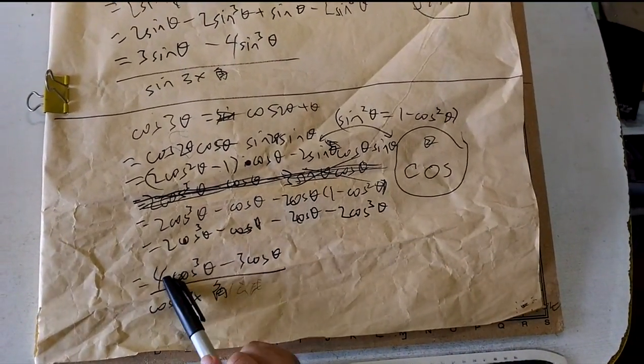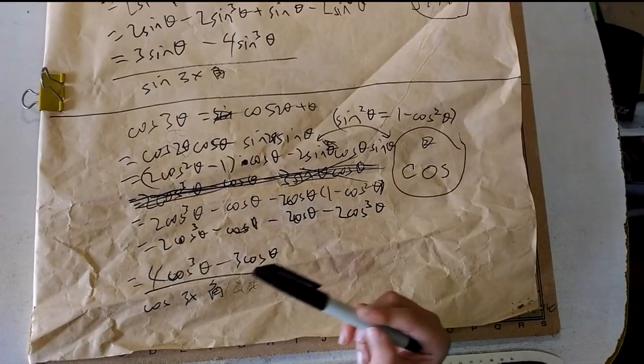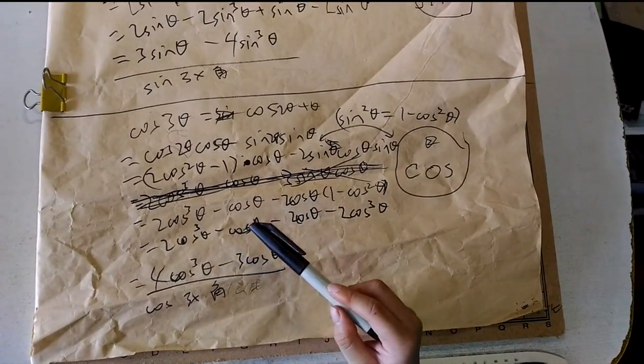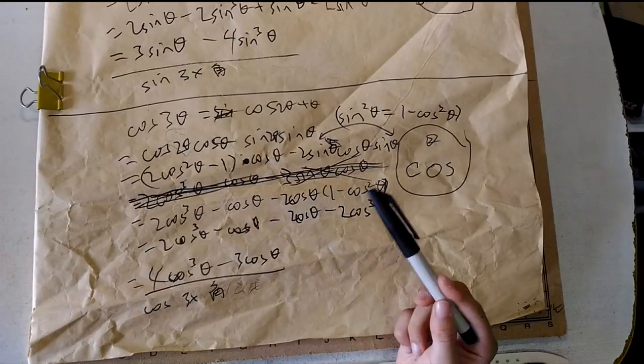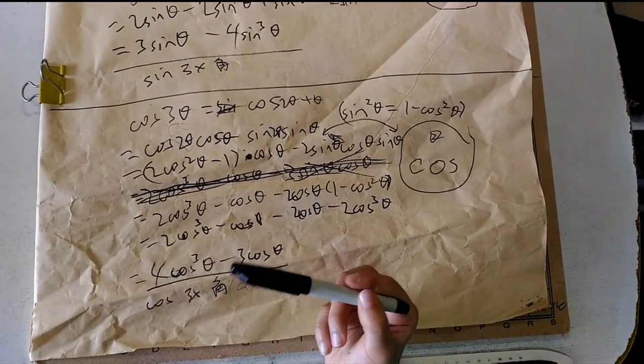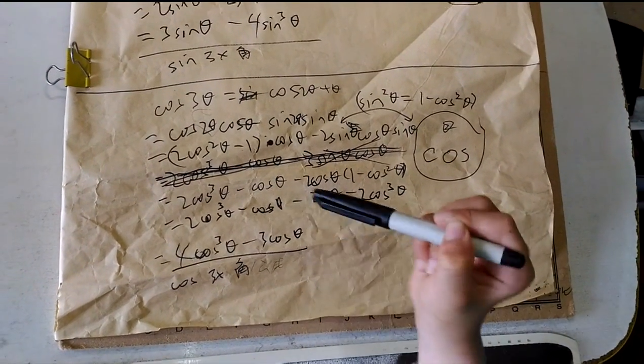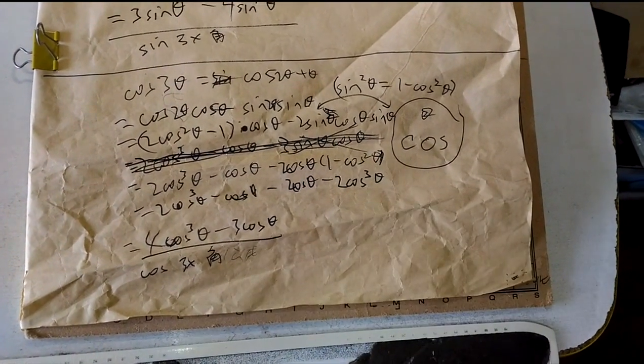2 cosine cubed plus 2 cosine cubed is 4 cosine cubed. And cosine plus 2 cosine is 3 cosine. So our finished answer is 4 cosine cubed minus 3 cosine, which is cosine of 3θ.